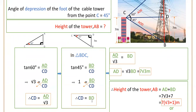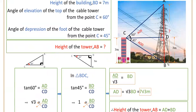Equating the two expressions: AD divided by root 3 equals BD. Therefore AD equals root 3 into BD. The BD value is 7 meters, that is the height of the building. So AD equals root 3 into 7, that is 7 root 3 meters.